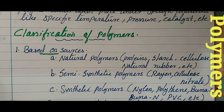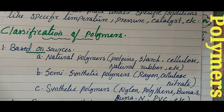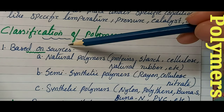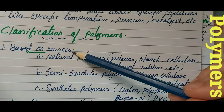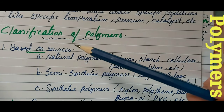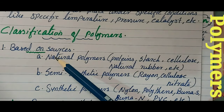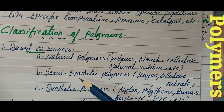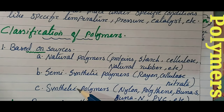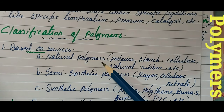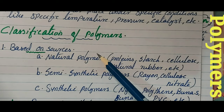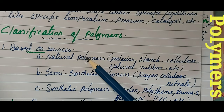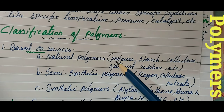Moving on to the classification of polymers, there are different types of classification. Based on the source — meaning from where we are getting the polymers — we have three types: natural polymers, semi-synthetic polymers, and synthetic polymers.